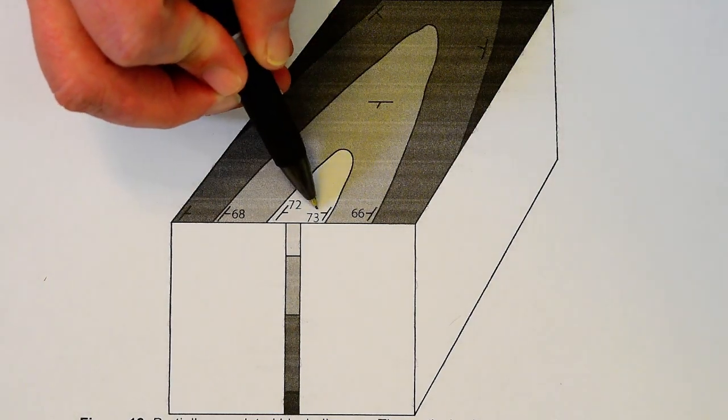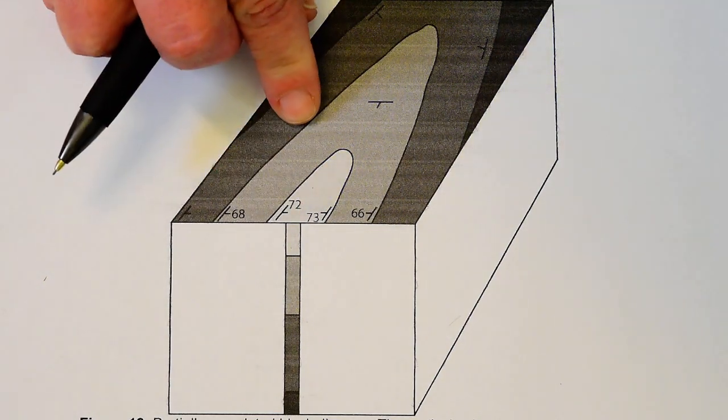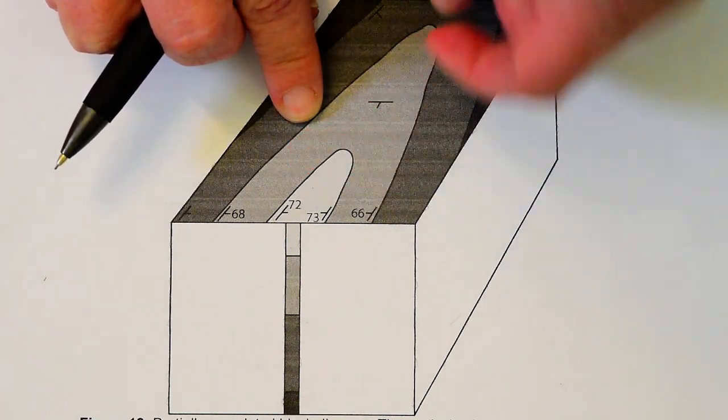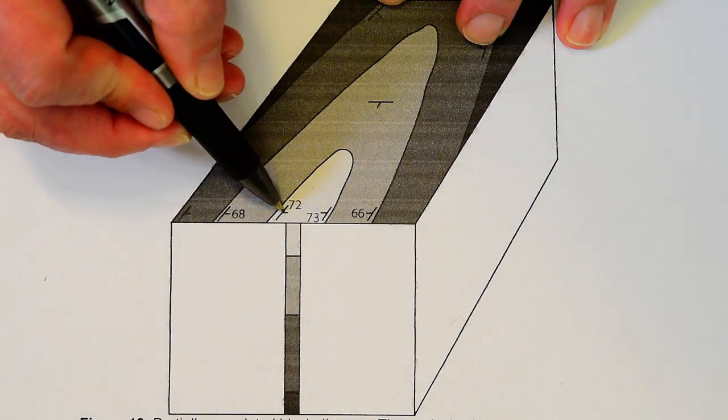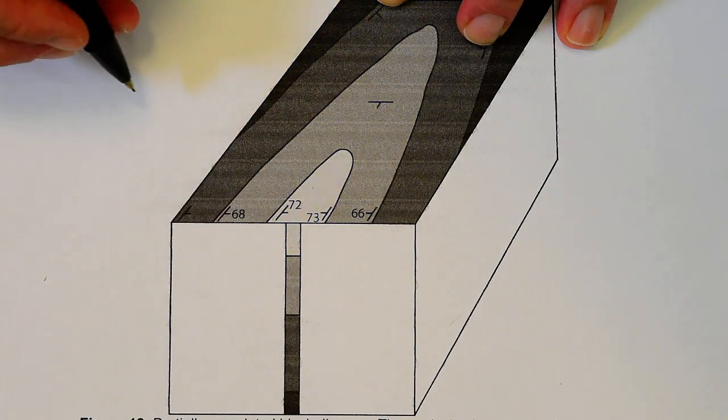So on this side, it says the rocks are dipping 73 degrees in that direction. On the other side, they're dipping 72 degrees in the opposite direction.